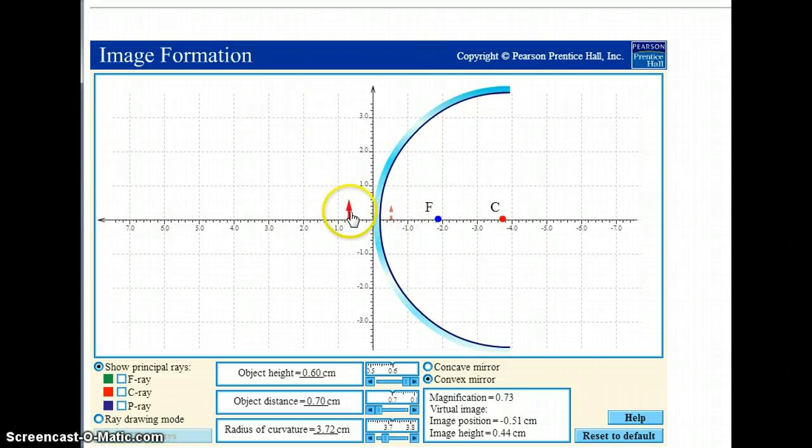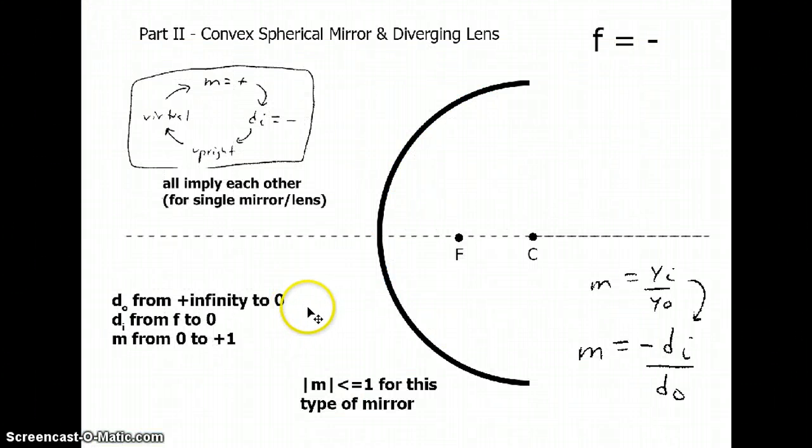So here's the object. The image grows, and eventually, if I could put this object right up against the mirror, the image would just be there as well, and it would approach the same size. So we converge on plane mirror behavior as do goes to zero, di goes to zero, and the magnification merges on plus one.